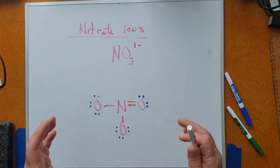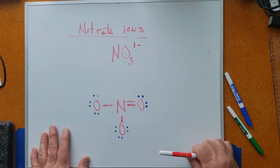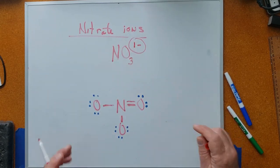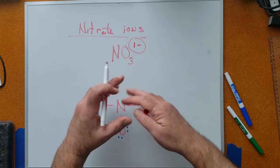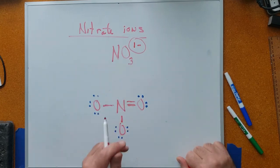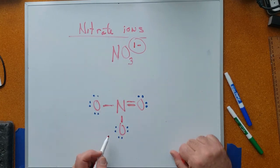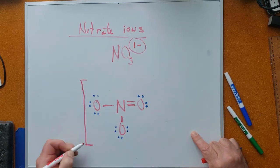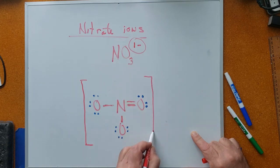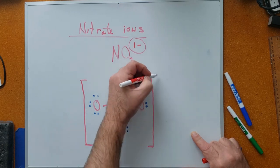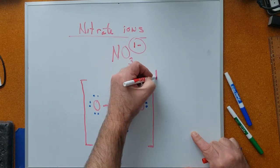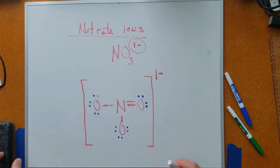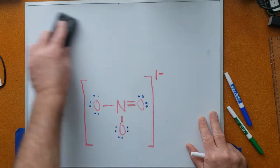There's one last thing to make this a proper Lewis dot structure for a polyatomic ion: we must indicate that the entire bundle of atoms — nitrogen and three oxygens — carries a charge of negative one. We do this by placing the entire structure inside square brackets and writing the charge, negative one, in the upper right-hand corner. That is the proper Lewis dot structure for the nitrate ion.